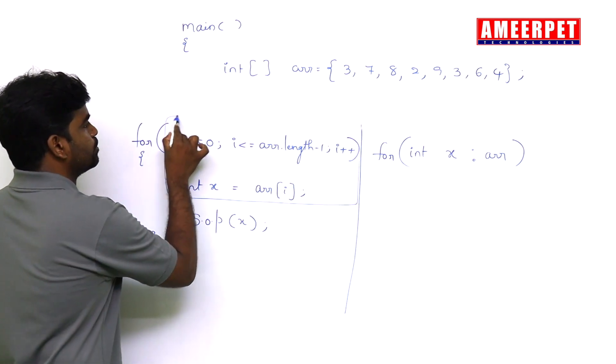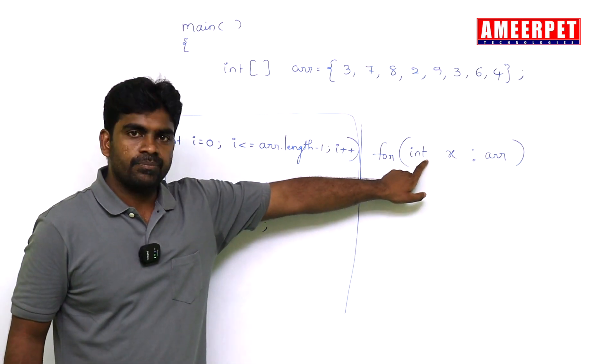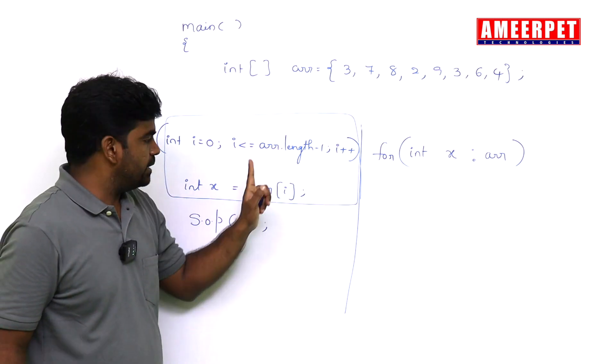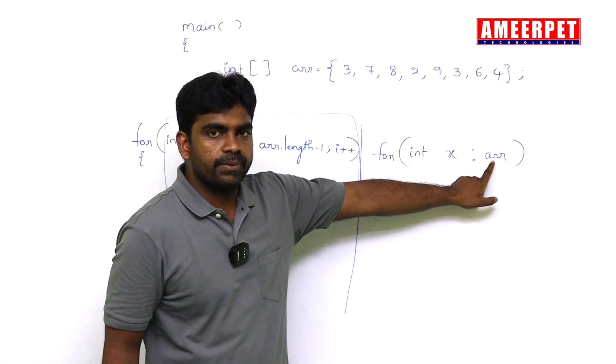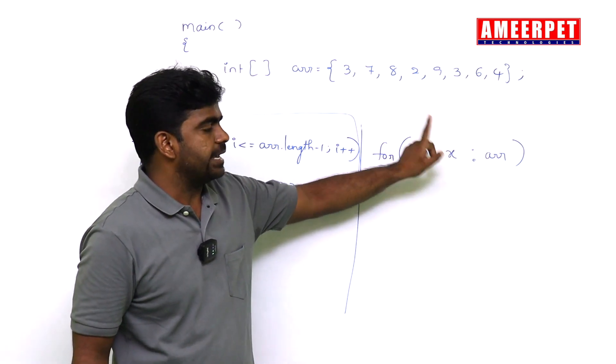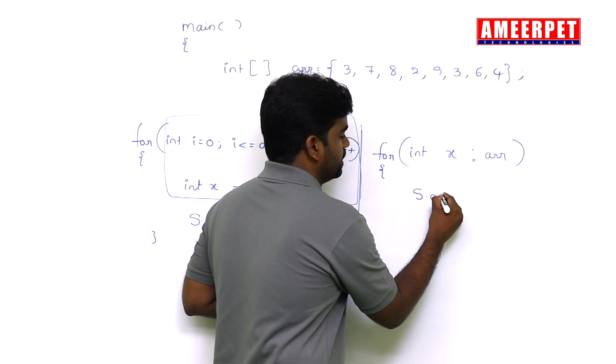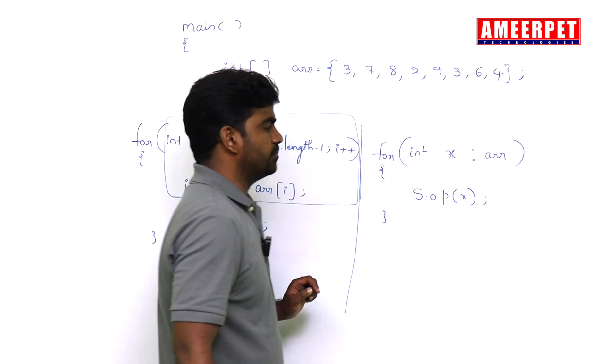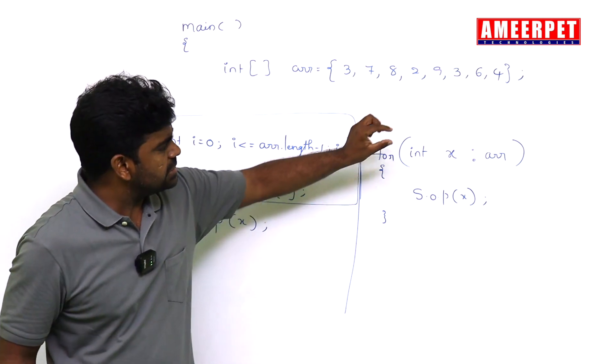From this array, automatically each element will come and store into one variable, what we have given, suppose x. See here, instead of writing this much code, simply we can write this. Instead of starting value, ending value, increment, decrement, we are directly getting the information from the array into x and we are printing the value directly. System.out.println(x).